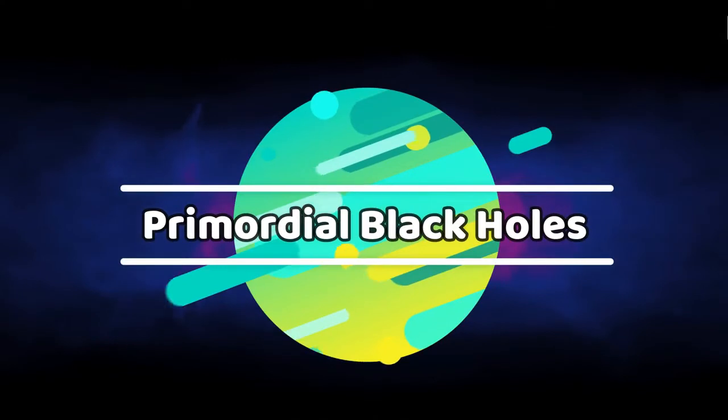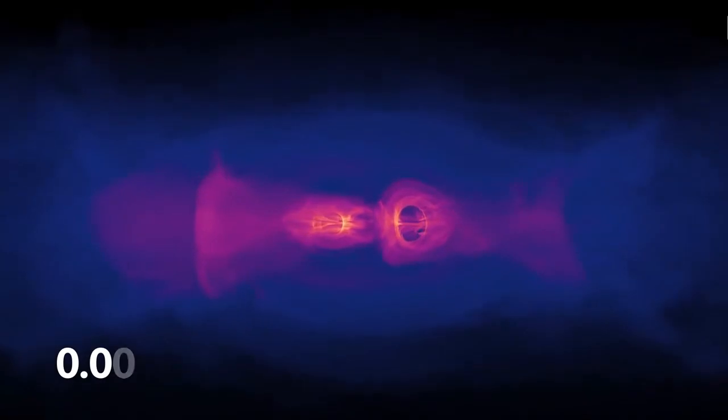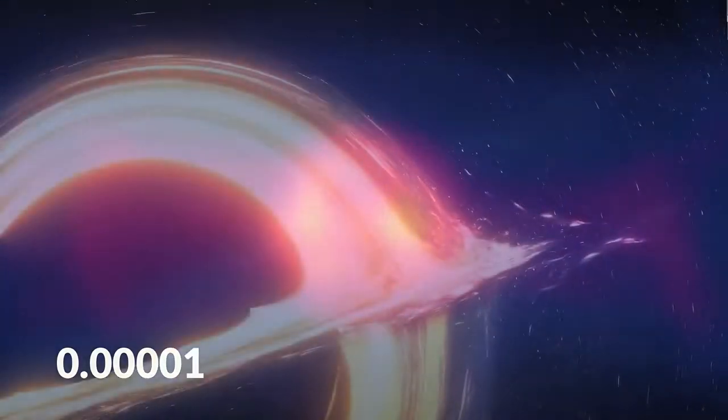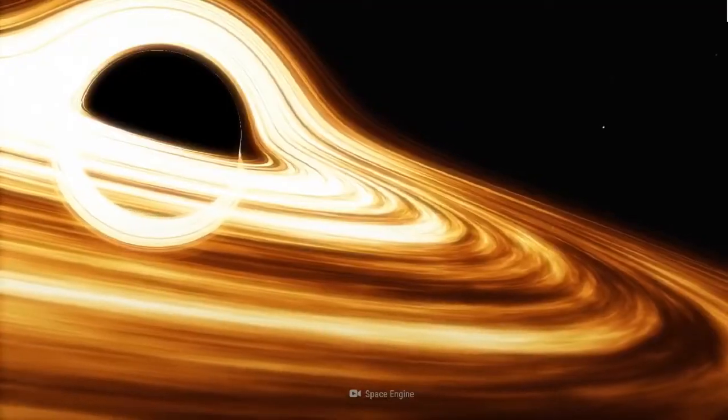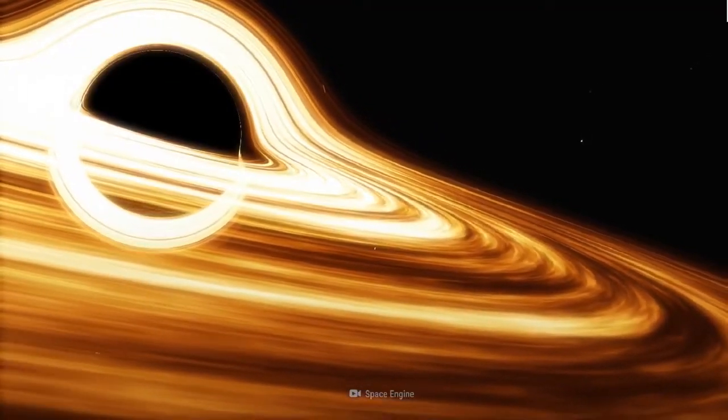The next type of black hole, called primordial black holes, are a hypothetical type of black hole, with initial masses ranging from about 0.00001 times the mass of a paper clip to about 100,000 times the mass of the sun, depending on just how soon after the big bang these black holes formed. But primordial black holes wouldn't have started out as a star anyway.